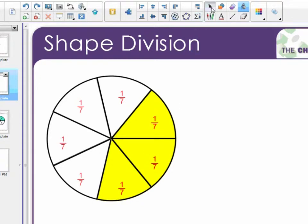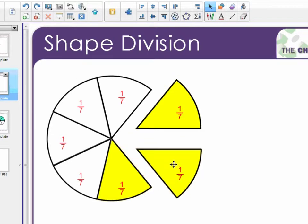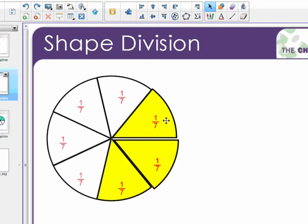The second thing I can do is I can click and drag individual shapes and move them independently. So this allows me to manipulate that shape once I've divided it.